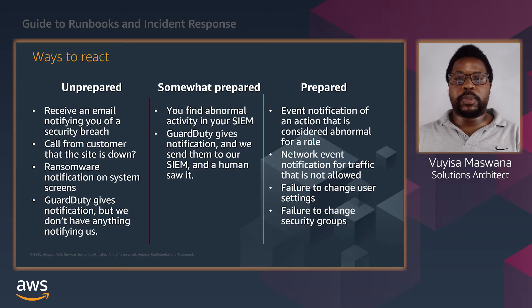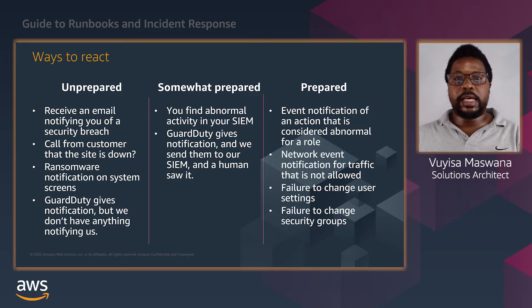In the case of a somewhat prepared customer, they have a SIEM and the notifications about the security event are going there. This customer has gone one step further than an unprepared customer — they have GuardDuty turned on and they have their notifications feeding into the SIEM. This would in turn notify the security teams that something has happened and that they should go and investigate.